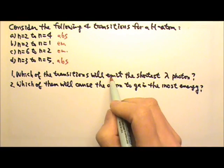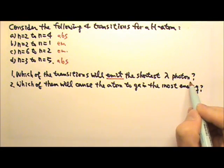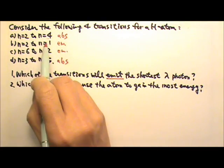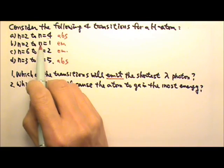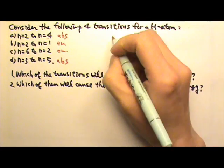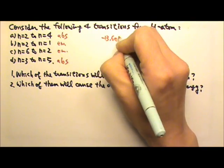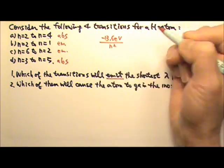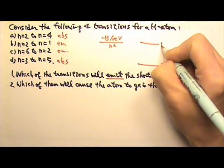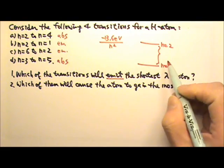For number one, we want the one that emits the shortest wavelength photon, that means the most energy. For b and c, 2 to 1 and 6 to 2, because of the equation negative 13.6 eV over n squared, if you remember, n=1 to n=2 involves the most energy.